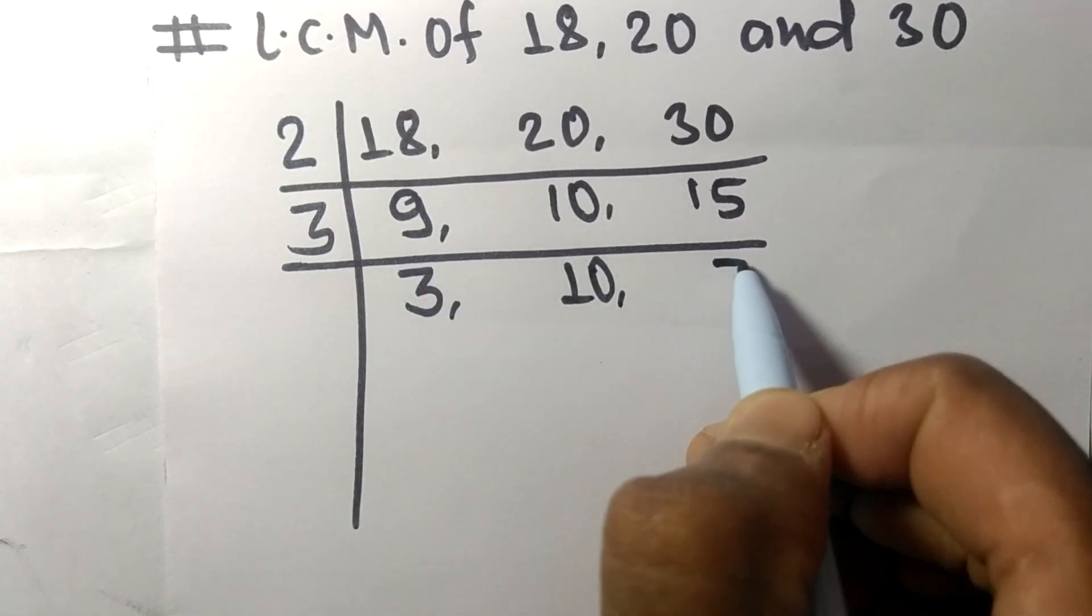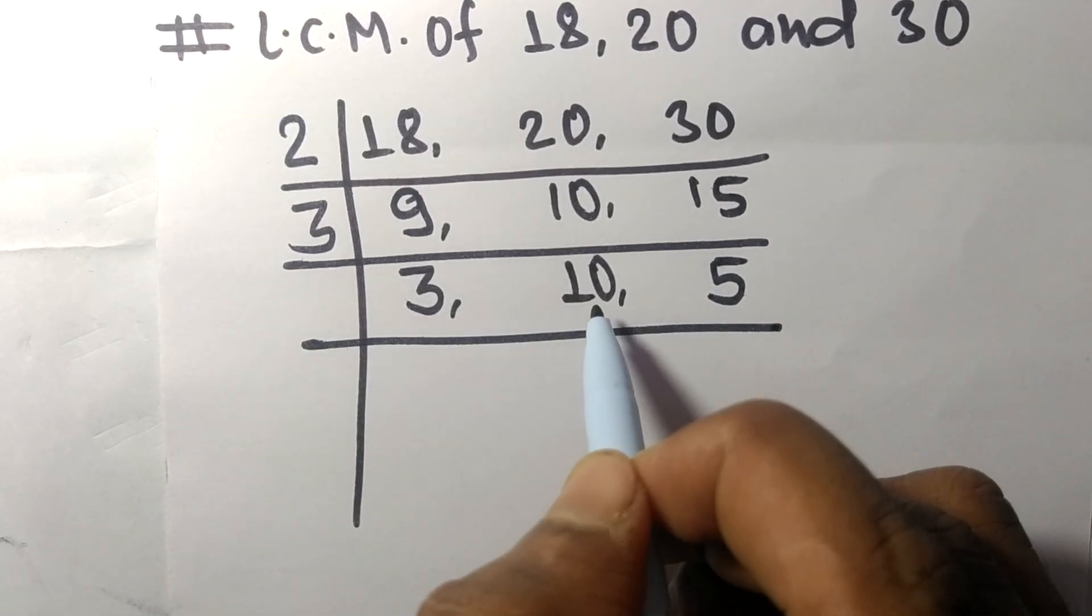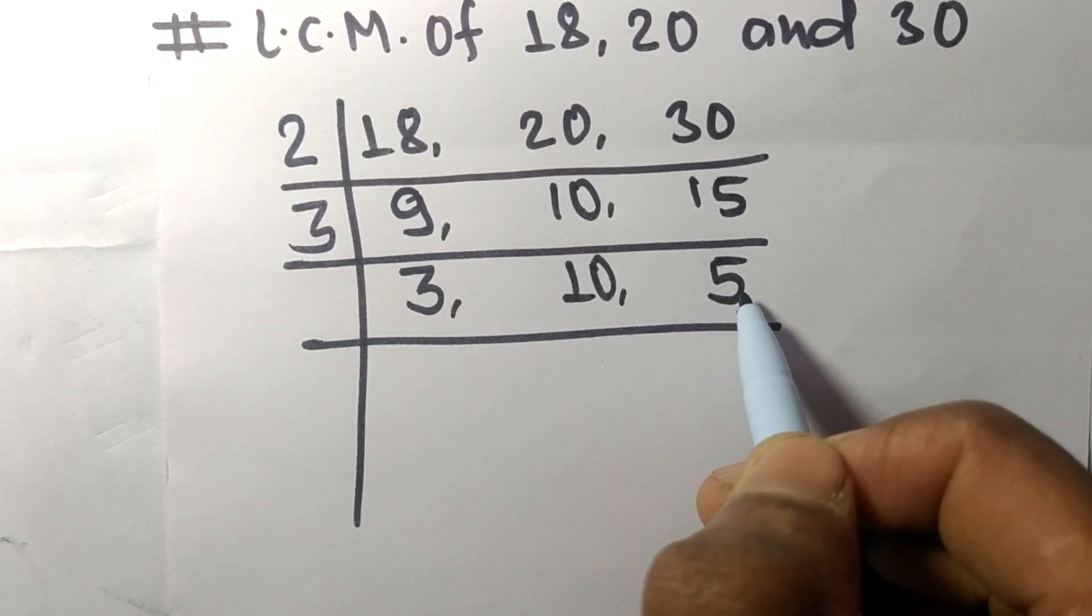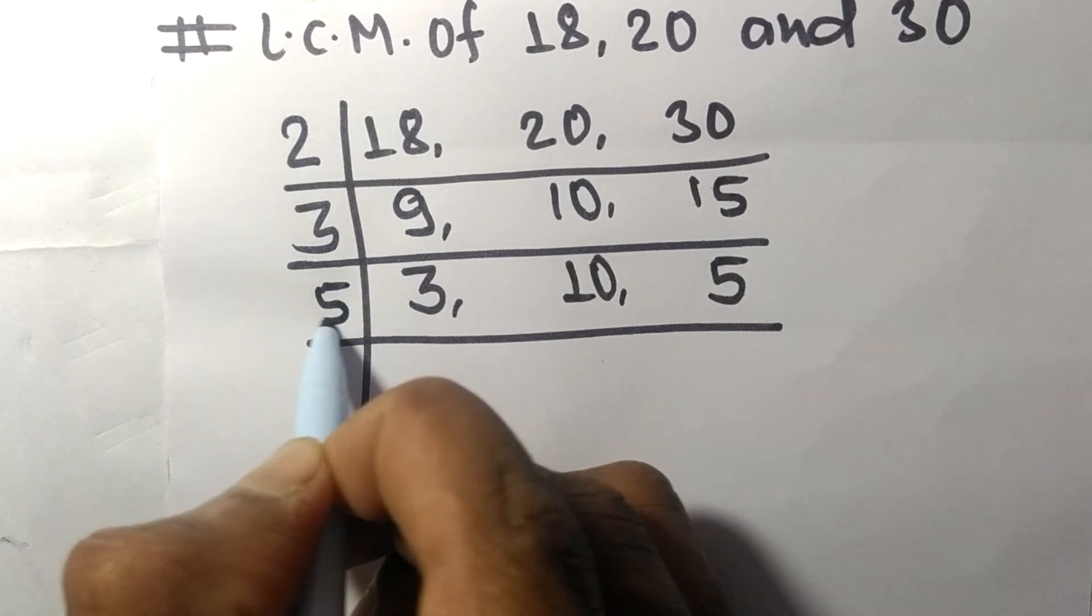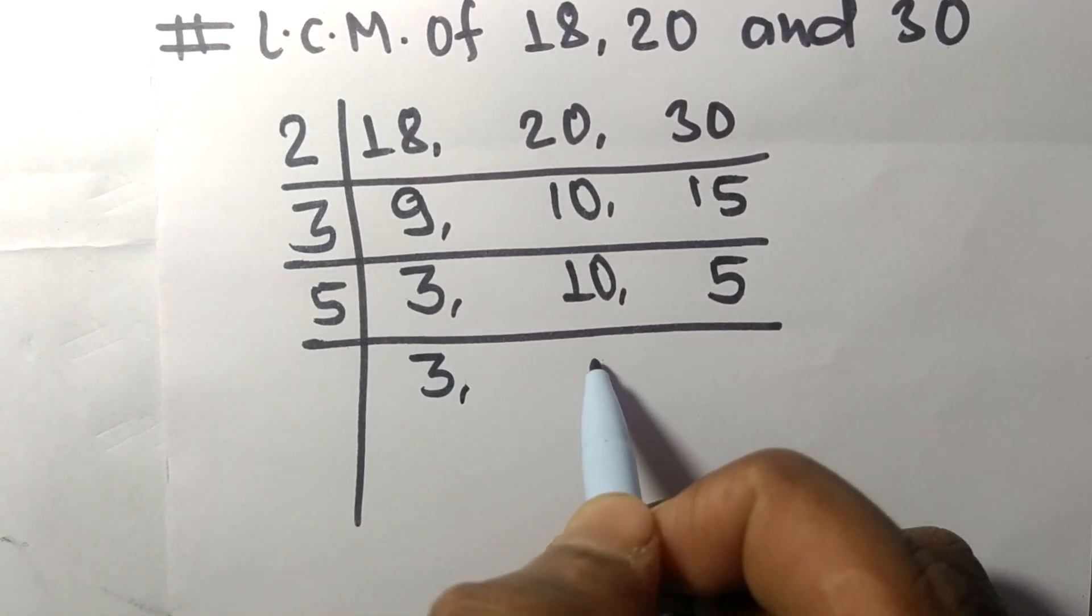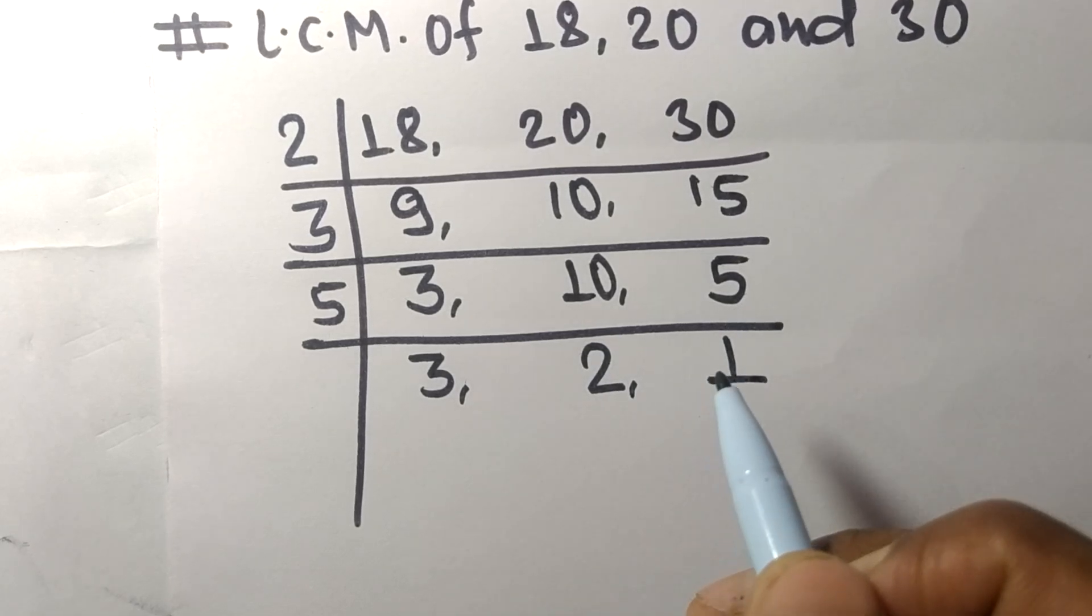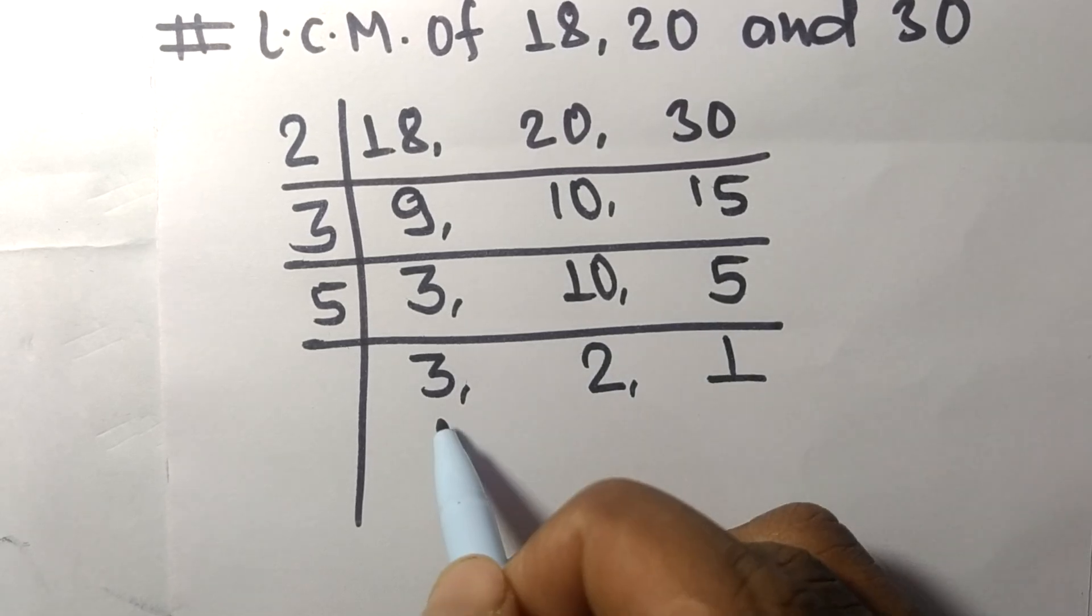Now 10 and 5 are divisible by 5. 3 is not divisible so it stays the same. 5 times 2 means 10, 5 times 1 means 5. Now the numbers 3, 2, and 1 are not divisible by the same number.